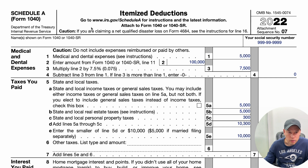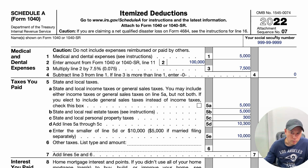This is the Schedule A Itemized Deduction for Tax Year 2022. Your social security number should pull over from the 1040.